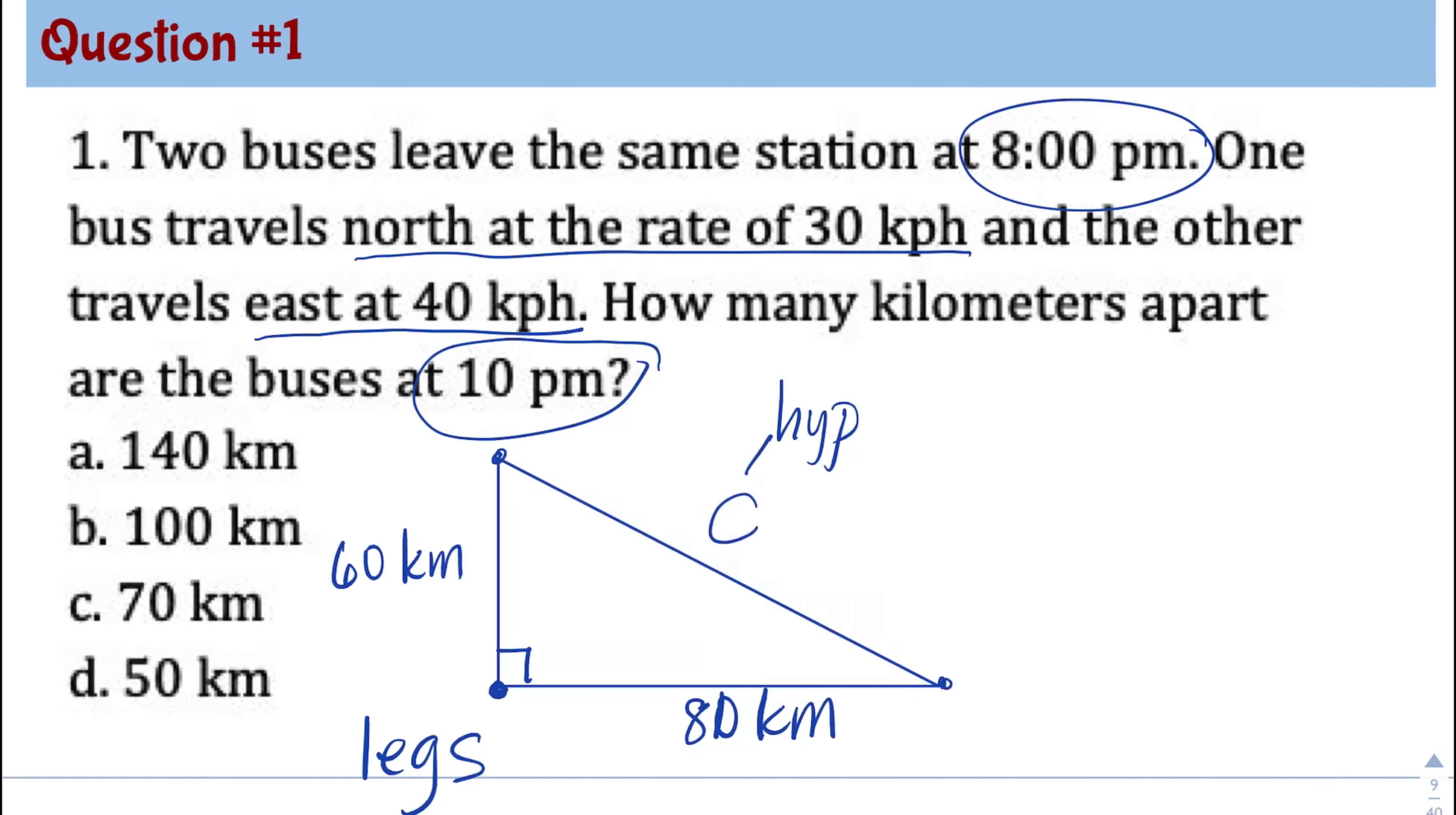60 kilometers and 80 kilometers are called the legs of the right triangle. So, knowing that C is the largest side, which of the choices can you eliminate? C and D, right? Because the side can't be less than 80 kilometers. C has to be more than 80 kilometers.